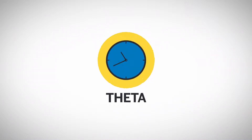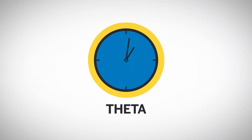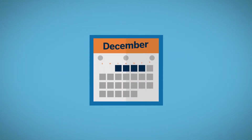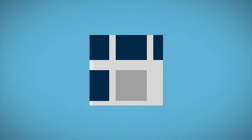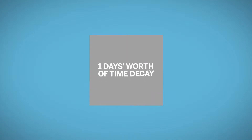Let's take a closer look at theta. Theta is the Greek that measures an option's sensitivity to time. Theta is usually expressed as a negative number to represent a loss in value to the long option holder. Theta is generally expressed as one day's worth of time decay.